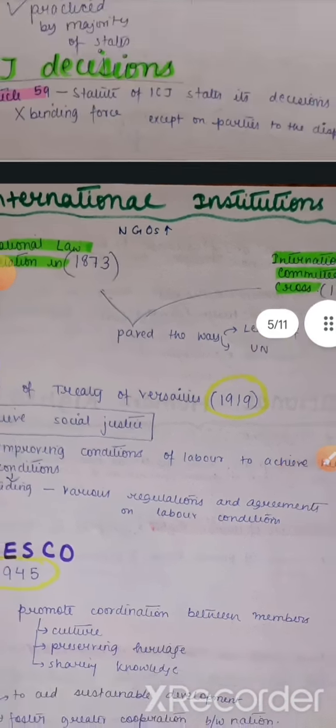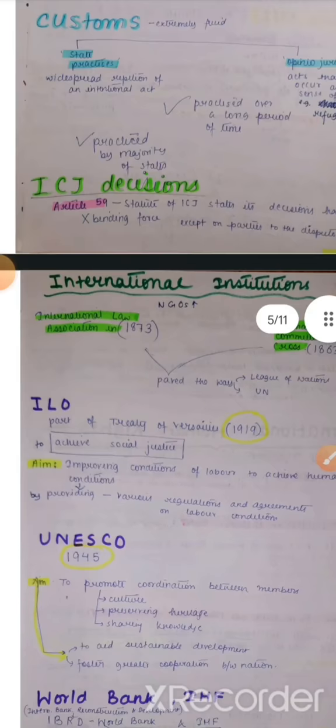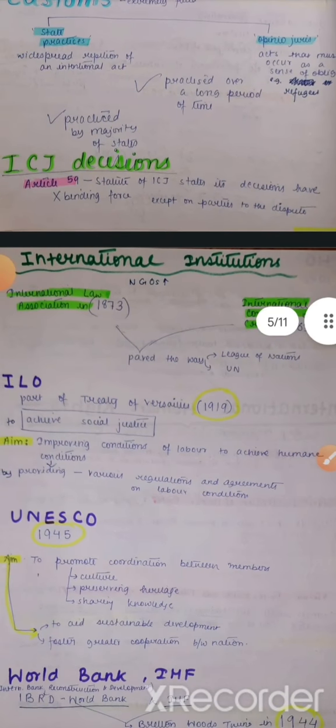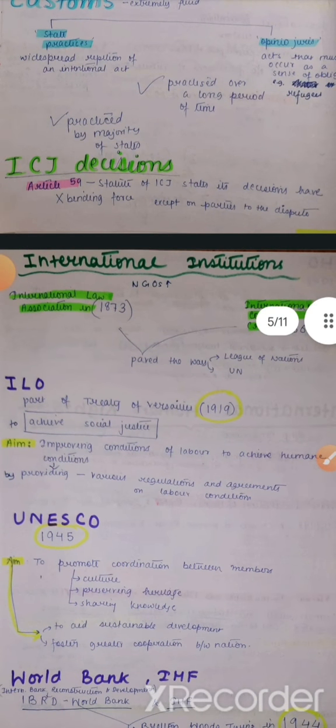Now let's discuss the UN branches in detail. ILO — International Labour Organization — was established as part of the Treaty of Versailles in 1919.